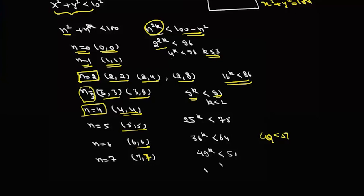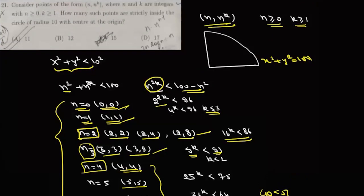And hereafter, 8^(2k) will be less than 100 minus 64, which is 36. Now this is not possible, so these are the only points possible. Now this is 1 + 2 + 3 + 2 + 1 + 1 + 1 = 11. So there'll be 11 such points inside this circle, and that's your option A.